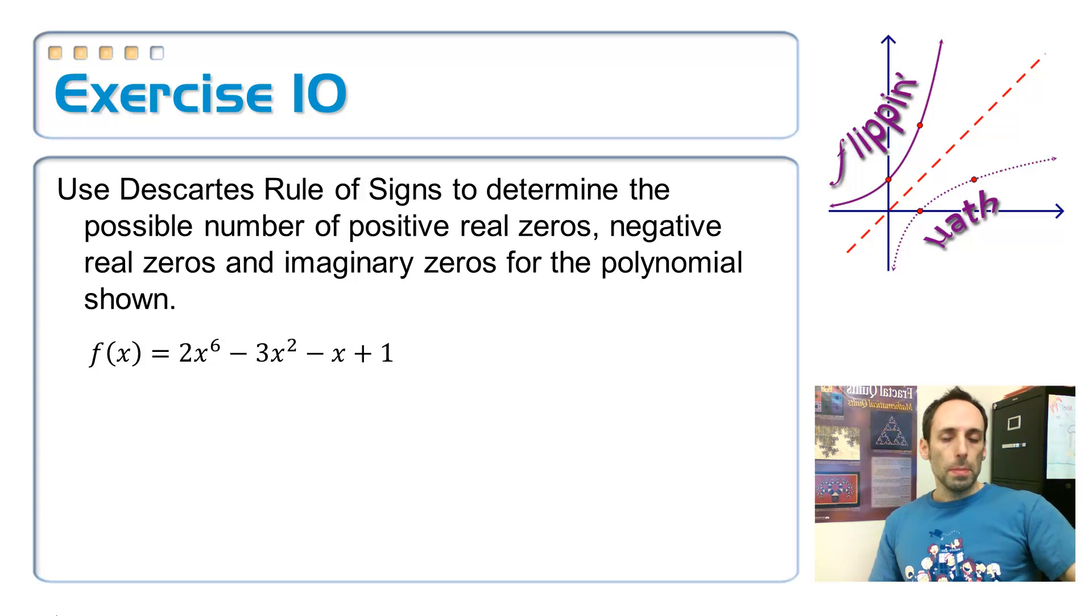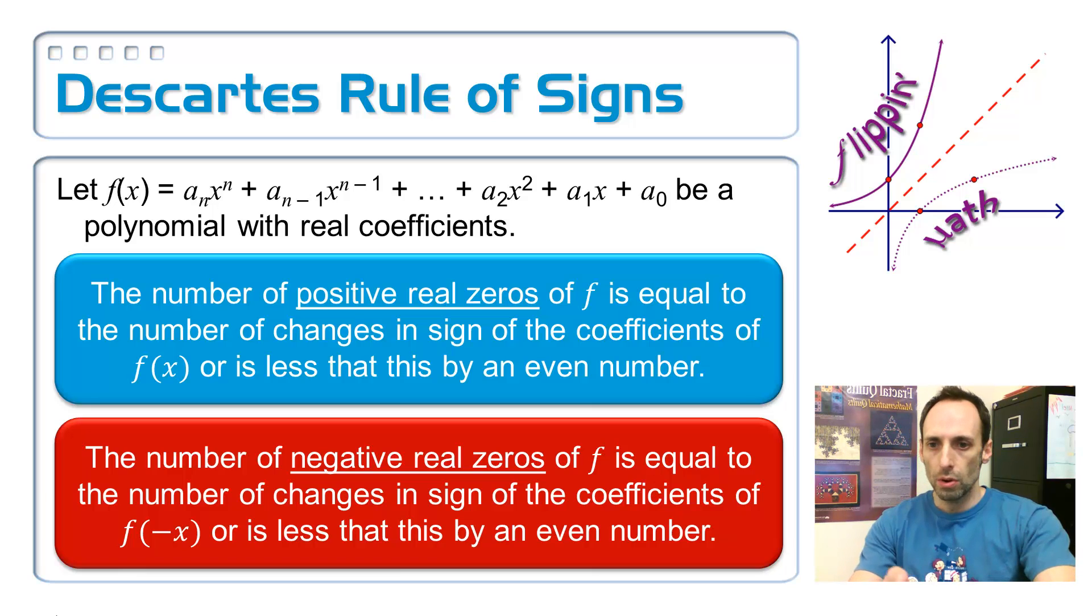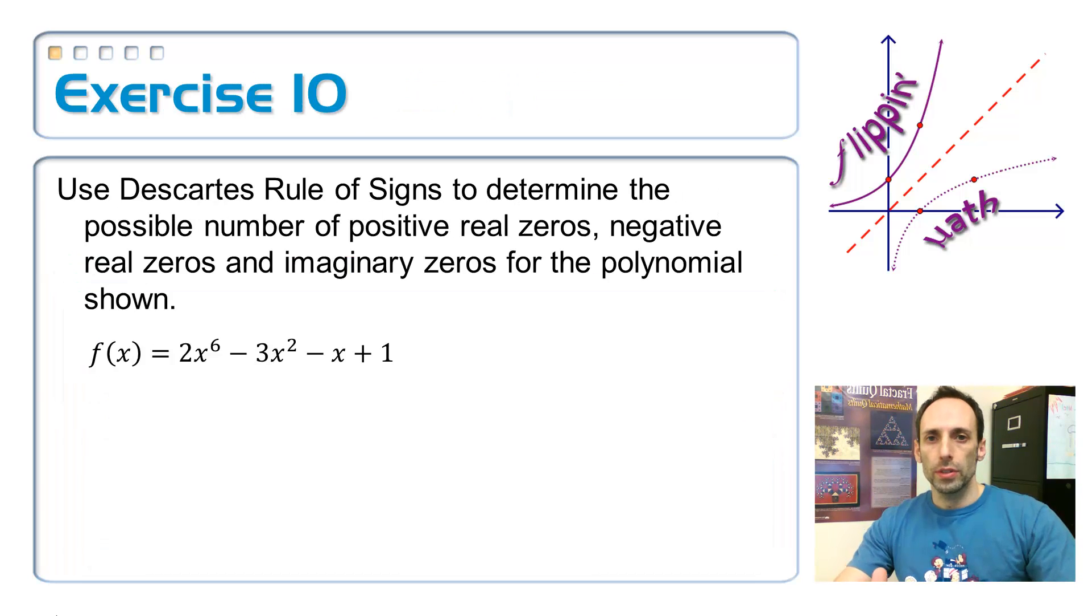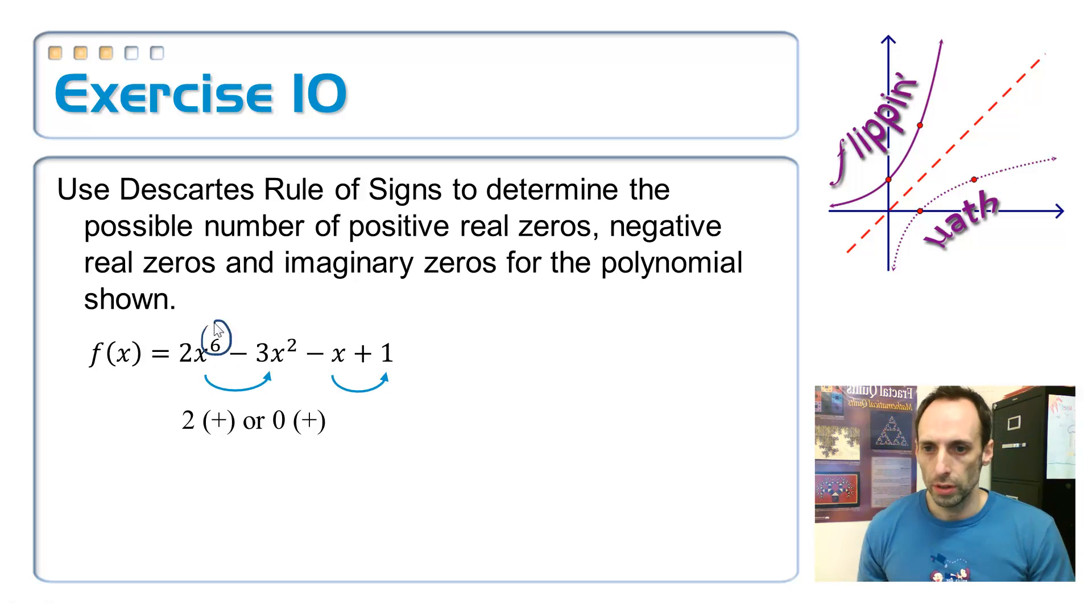So use Descartes' rule of signs to determine the possible number of positive real zeros, negative real zeros, and imaginary. Wait a minute. Imaginary ones. Let me go back here. This is only something about real ones. Positive real ones and negative real ones. So I'm going to show you how to figure out, doing some very basic arithmetic, how to get the imaginary ones after we found the reals, the positives and the negatives. So here is our polynomial equation. Tell me, how many zeros should we expect to get? Look at that degree right there. That degree right there is telling me that I should expect to get six. Let me just go ahead and write that on there. So I should get six zeros.